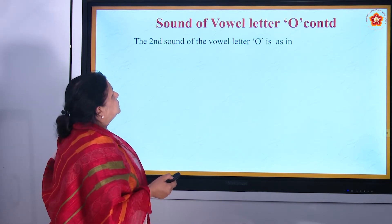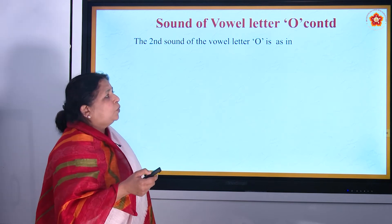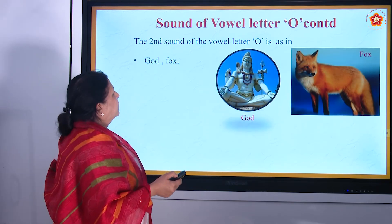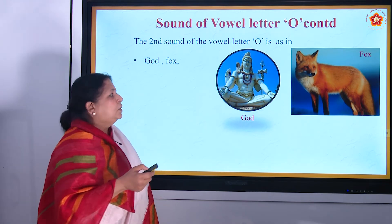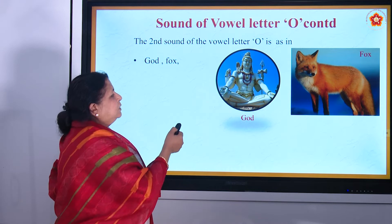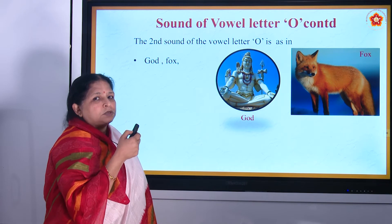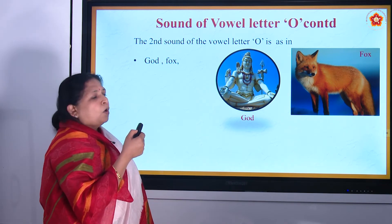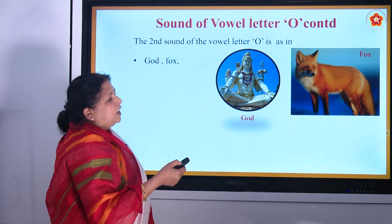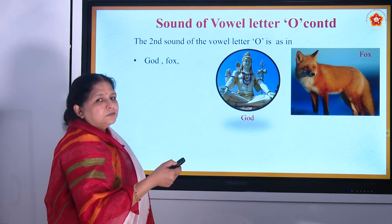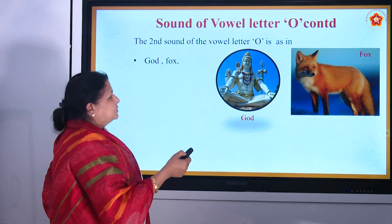The second sound of the vowel letter O is as in 'god' — G, O, D — god, any god. Here the picture beautifully shows Lord Shiva — he is a Hindu god. Then 'fox' — F, O, X — fox. Yes, a fox is very cunning.